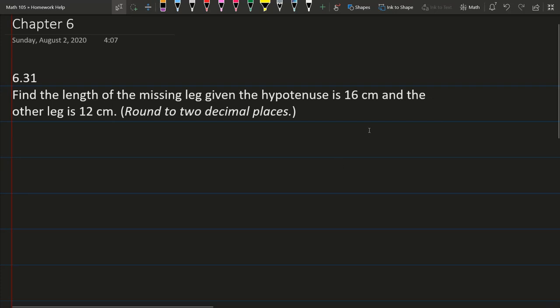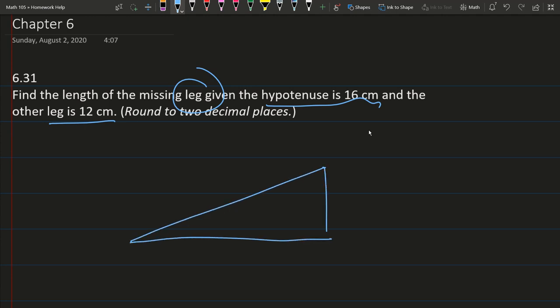So we're going to find the length of a side given the hypotenuse and the other leg side. Let's go ahead and draw a right triangle. This is most likely not going to be to scale.